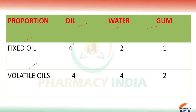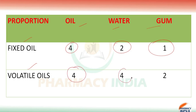For fixed oil, the ratio of oil to water to gum is 4:2:1. For volatile oil, the ratio is 4:4:2. Students, these are very important points, so please note them down, as exam questions may be asked directly from this portion.